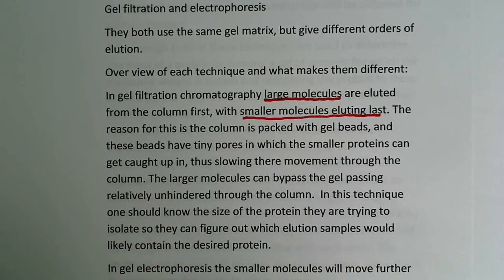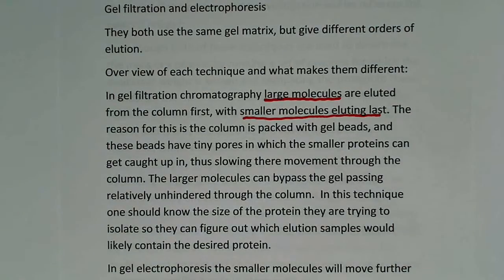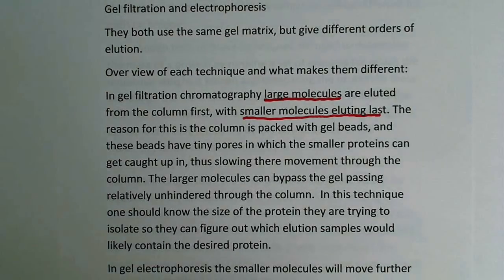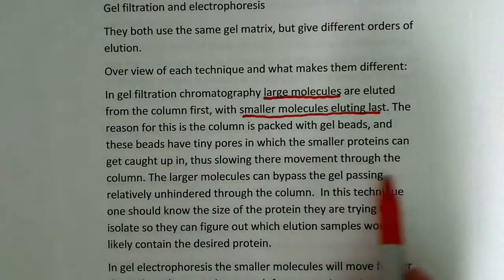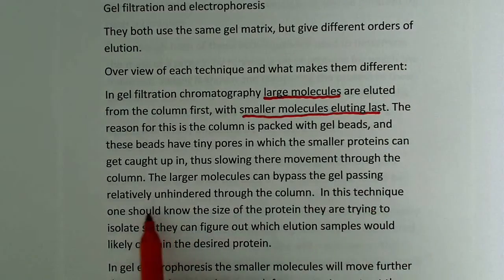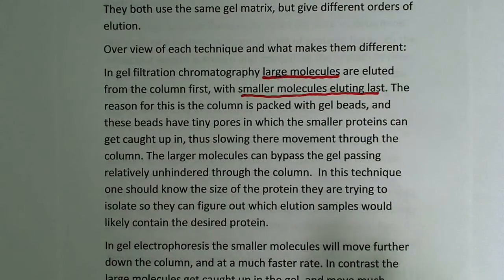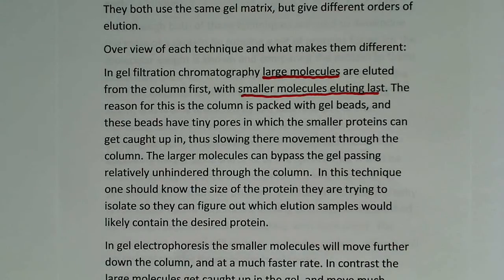The reason for this is that the column is packed with gel beads, and these beads have tiny pores in which small proteins can get caught up in, thus slowing their movement through the column. Essentially, you take a protein in solution and pour it through this column. If the protein is small, it gets caught up in the small pores inside these gel beads, so it takes longer to get through the column. The larger molecules can bypass the gel relatively unhindered and move through the column more quickly.